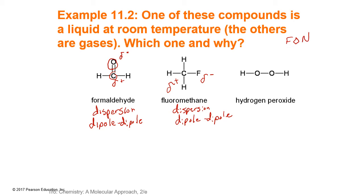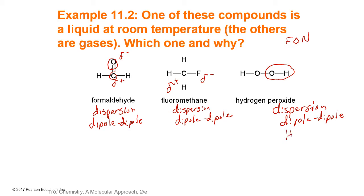For hydrogen peroxide: we do have dispersion — everything has dispersion. We have dipole-dipole. We also have hydrogen directly connected to oxygen, so in this case we have hydrogen bonding. Because we have all three forces, hydrogen peroxide is going to be a liquid at room temperature. The other two — formaldehyde and fluoromethane — are gases.